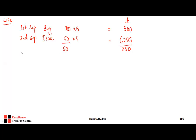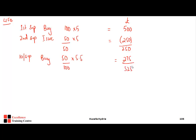On 10th September we buy 50 units at £5.50 = £275. Now we have a total of 100 units worth £525 across two slots: 50 units at £5 and 50 units at £5.50.